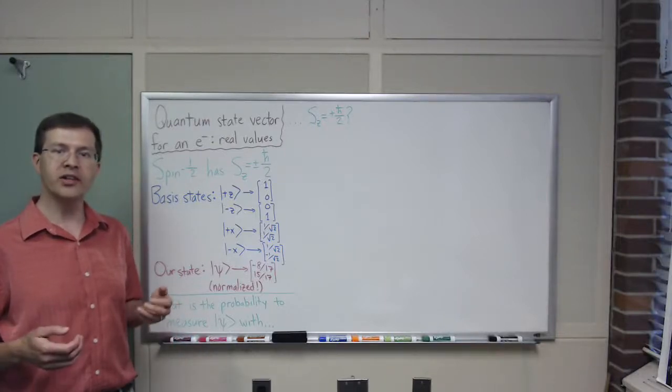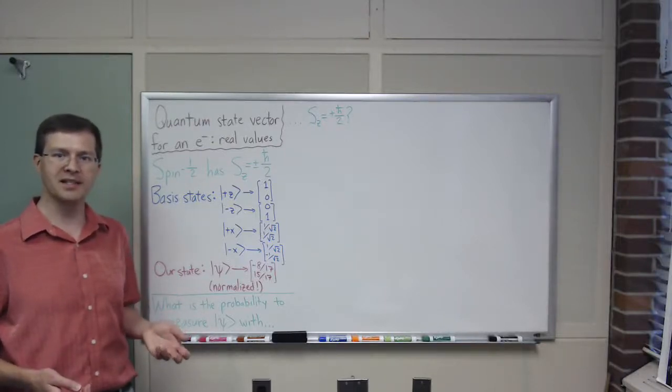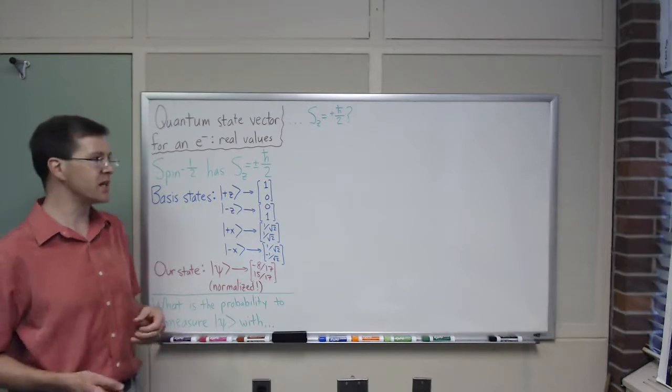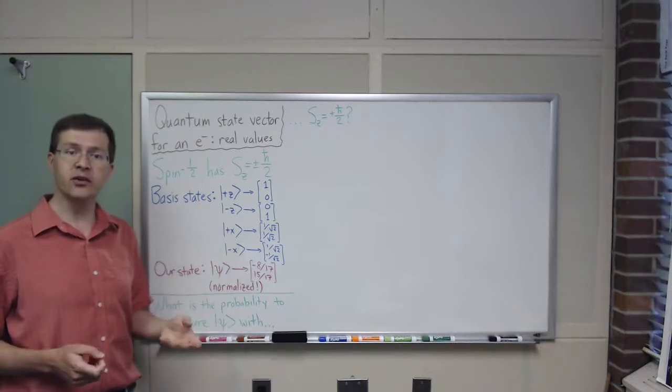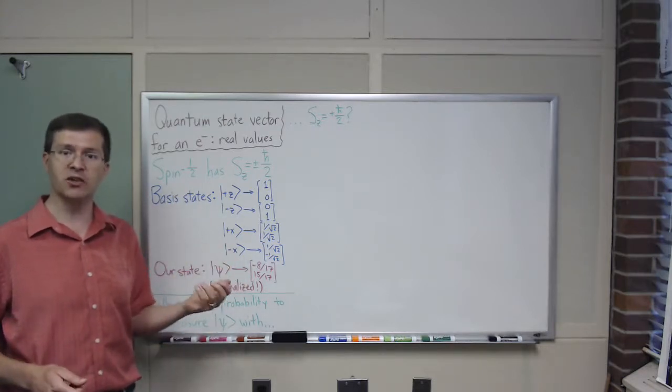I want to do some examples of how to calculate measurement probabilities in quantum mechanics. The system we're going to use is one of the simplest ones I know. It's an electron sitting by itself, and we're only going to consider its spin behavior, its intrinsic angular momentum.